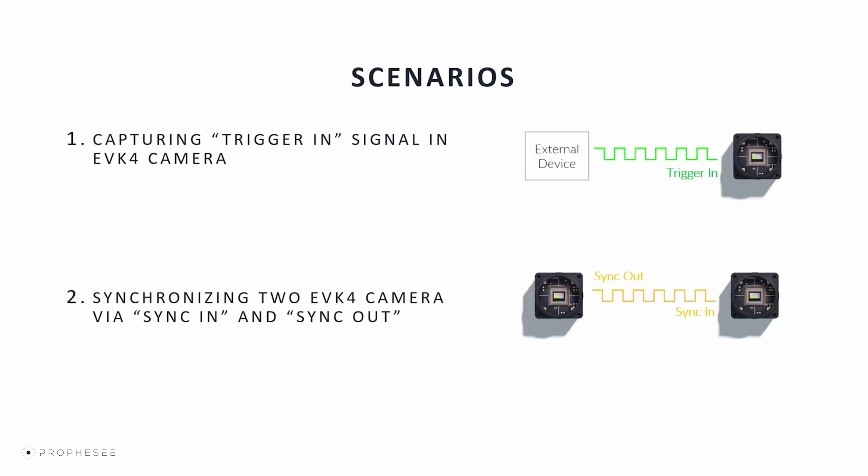In this video, we are demonstrating two scenarios. First, capturing external trigger signal as trigger-in. We don't cover the trigger-out interface because not all Prophecy cameras have this functionality — for example, it is not available on the EVKs with the IMX636 sensor. Second, synchronizing two EVKs via the sync-in and sync-out signals.